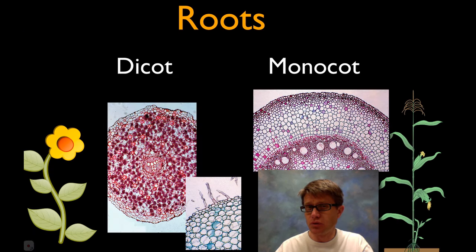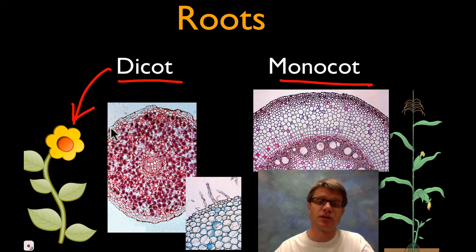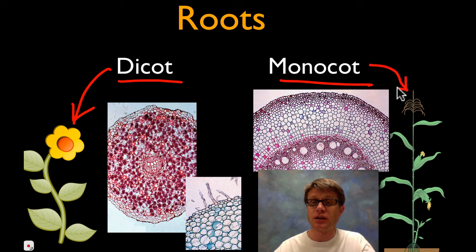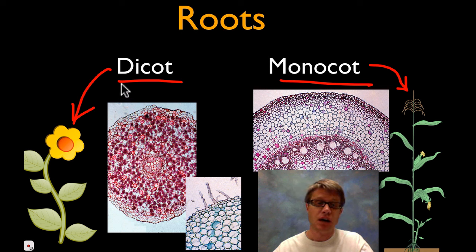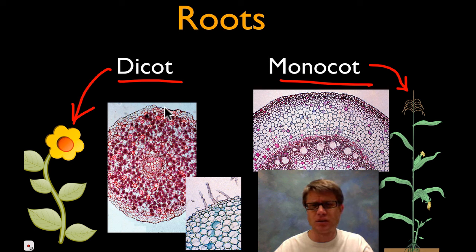Let's start at the roots and work our way up through the shoots. A quintessential example of a dicot would be a sunflower or a dandelion, and a monocot would be corn or grass. We're going to work our way up from the roots to the stems and then finally to the leaves, and you'll find that there are similarities between the two but subtle differences.